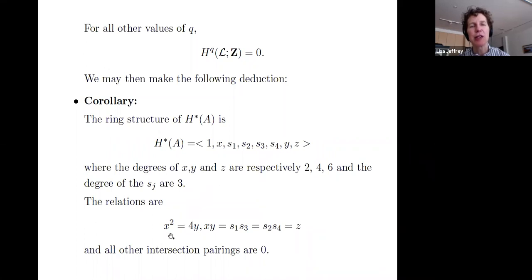And the relations then are X squared equals four Y. And X, Y, so the X squared equals four Y, that's a relation in degree four. The relations in degree six are that X and Y are Poincaré dual. So X, Y equals Z. And also, there are pairs of the S's that are equal to Z also. Some of the other pairs of the S's have product zero.